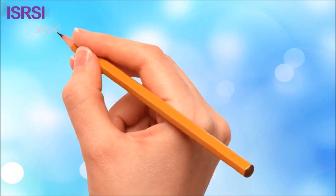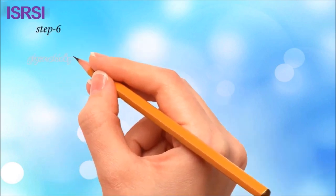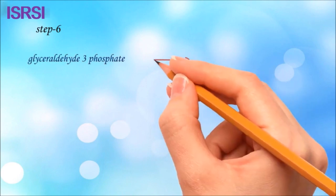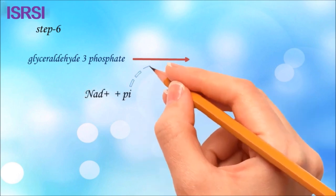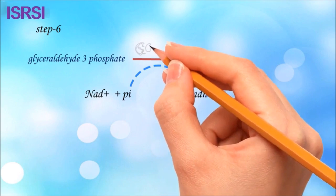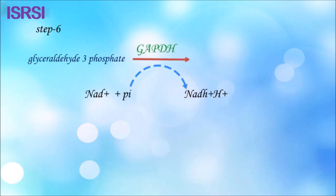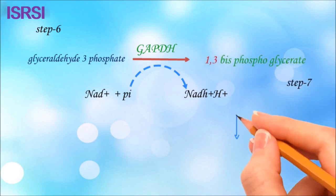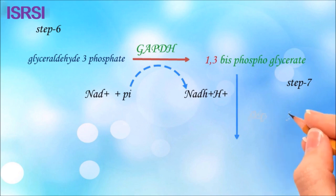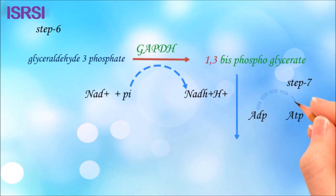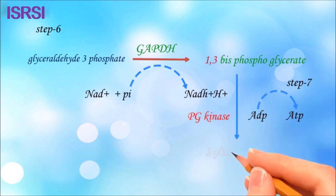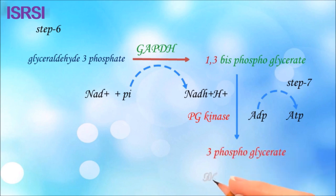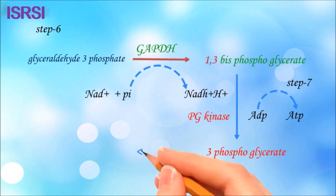In the payoff phase, reactions 6 through 10 produce 4 ATPs. In step 6 of glycolysis, glyceraldehyde-3-phosphate is converted into 1,3-bisphosphoglycerate by the enzyme glyceraldehyde-3-phosphate dehydrogenase. In step 7, ADP is converted into ATP by the enzyme phosphoglycerokinase — this is also called substrate-level phosphorylation. The 1,3-bisphosphoglycerate is converted into 3-phosphoglycerate.